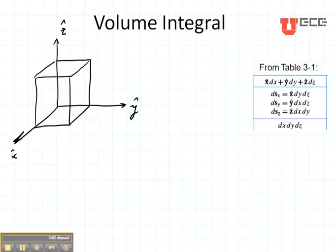Now let's consider how to do a volume integral in rectangular coordinates. Let's say that I have a charge density that is 4 coulombs per meter cubed and it goes from X equals 0 to 1.5.